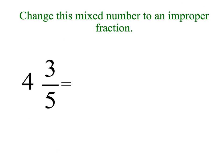And another example: five times four is twenty, plus three, so it's twenty-three over five.